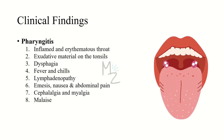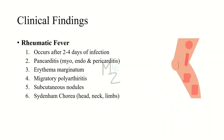Pharyngitis presents as an inflamed and erythematous throat. Exudative material may or may not be present on tonsils. It causes dysphagia (pain during swallowing), fever, chills, lymphadenopathy, anorexia, nausea, abdominal pain, cephalalgia (headache), and myalgia (muscular pain). If left untreated, pharyngitis causes acute rheumatic fever, which occurs two to four weeks after infection and infects all three layers of the heart — termed pancarditis — presenting as myocarditis, endocarditis, and pericarditis.